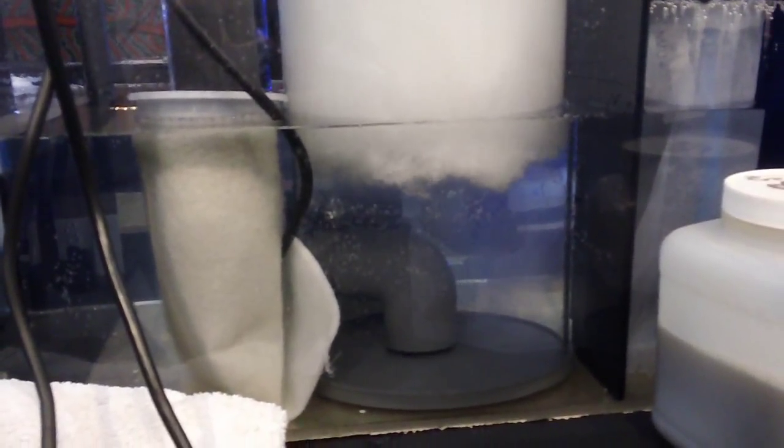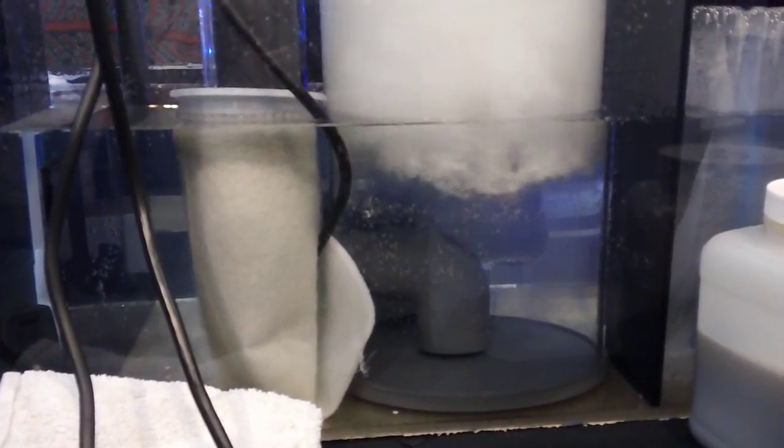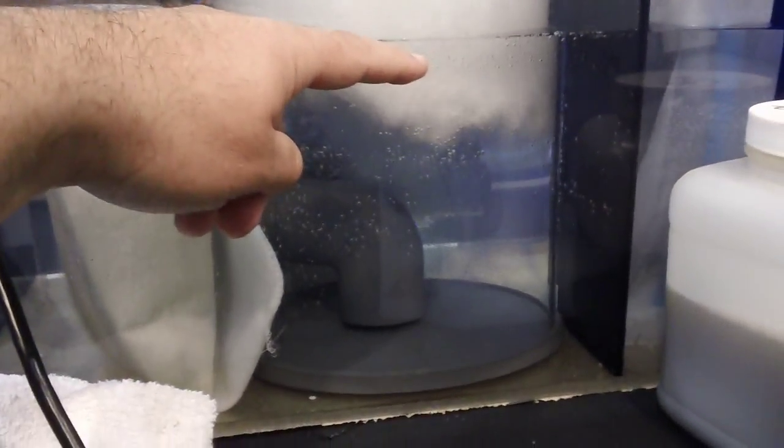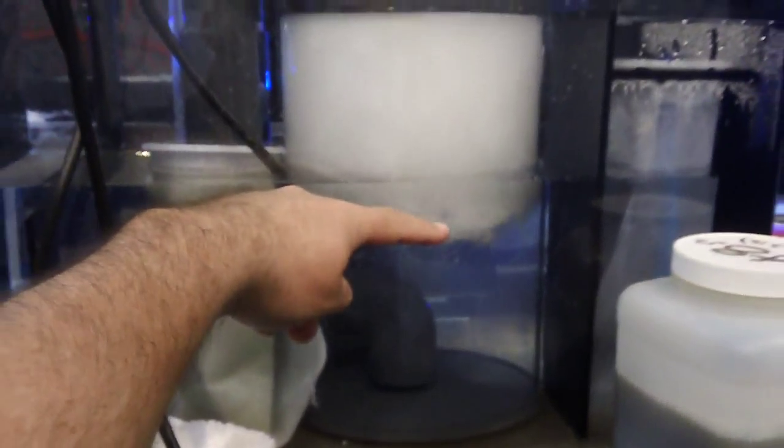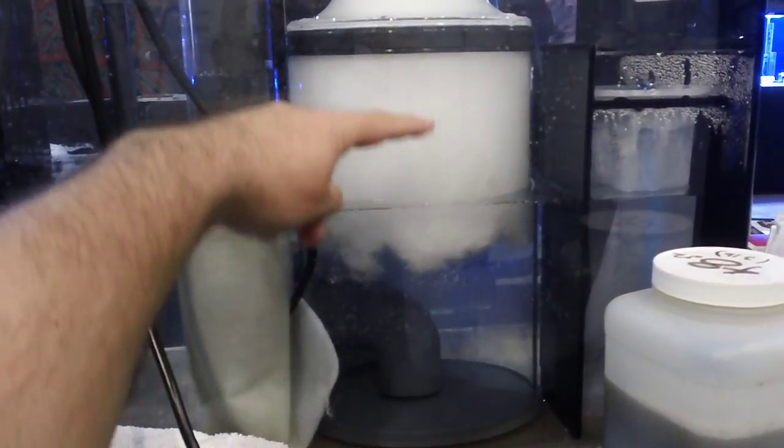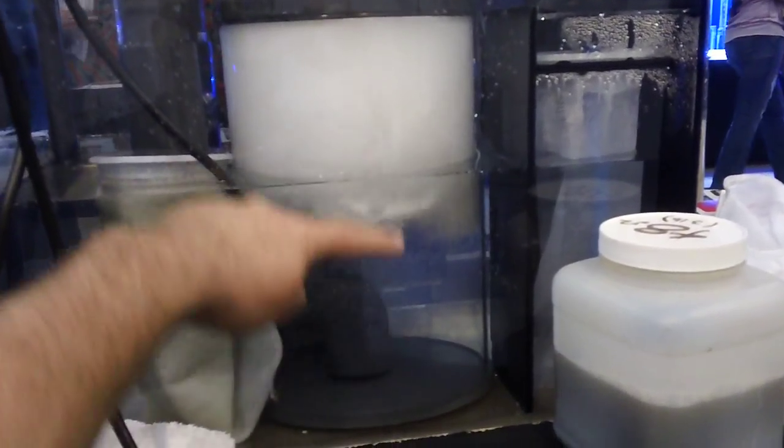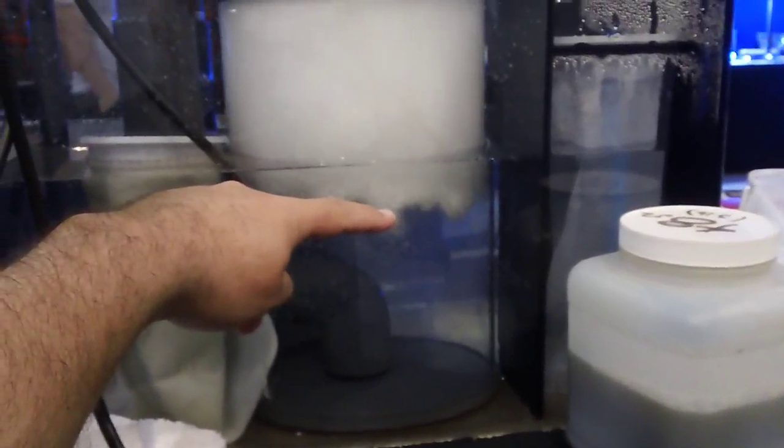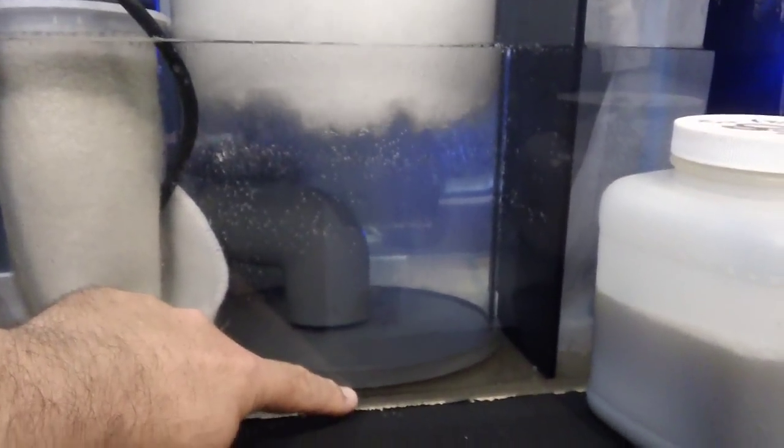When you look at this protein skimmer, this is an INS-180E protein skimmer, and you can see the foam level is about just above the halfway mark on the whole reaction chamber. This is about a little over 12 inches, so it's about 6 inches down. And people have asked, how come there's so much empty space down here?